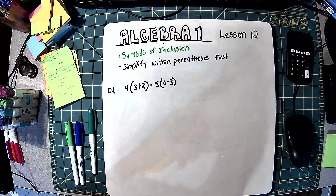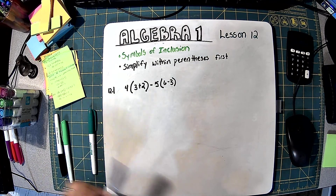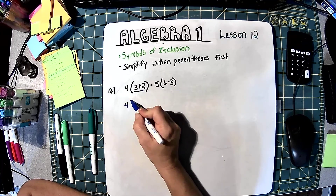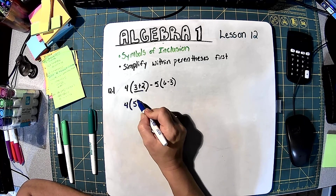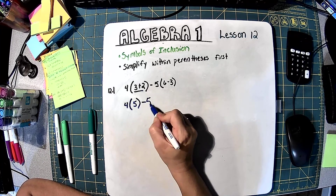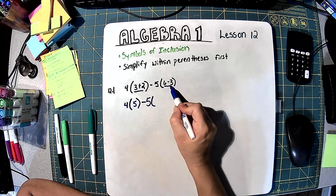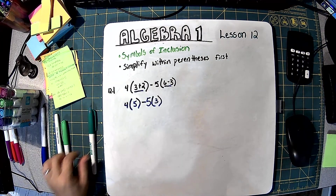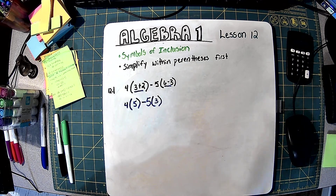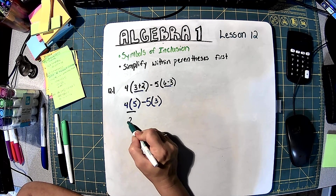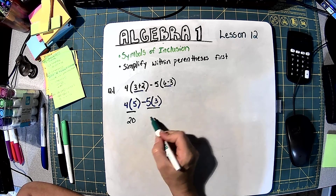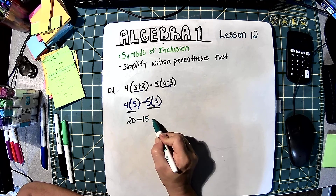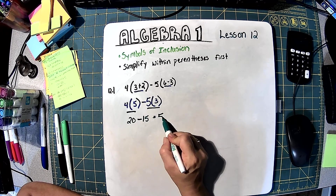The first thing I have to do is what's inside the parentheses. So first I'm going to do 3 plus 2 — so 4 times 5. Then I'm going to do 6 minus 3, which would be 3. Now I have to multiply first, then add or subtract. So 4 times 5 is 20, and negative 5 times positive 3 is negative 15. So this breaks down to 20 minus 15, which is 5.